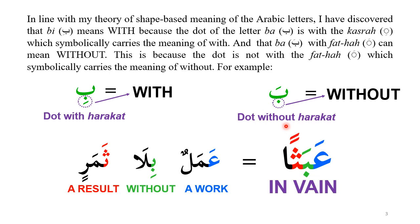You can see an example of Ba meaning 'without' in the word 'Abasan,' which means 'in vain.' According to my theory, each letter has a meaning that gives the meaning of the word. So 'Abasan' can be thought of as 'Amal bila samar,' meaning 'a deed without a result.' Sa has the meaning of result, Ba here means Bila, and A means Amal — so there is a built-in meaning for this word.